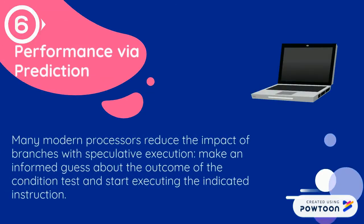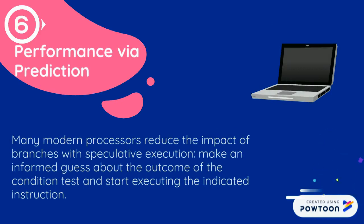Performance Via Prediction. Many modern processors reduce the impact of branches with speculative execution — making an informed guess about the outcome of a condition test and starting to execute the indicated instruction.